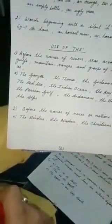Then you have to use before the names of races or nations. As the Hindus, the Muslims, the Christians. So you have to put THE before the races. Like Hindu, before Hindus you have to put THE. Before Muslims you have to put THE. Before Christians you have to put THE.